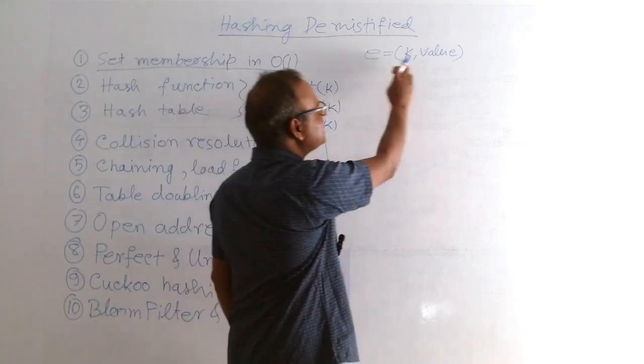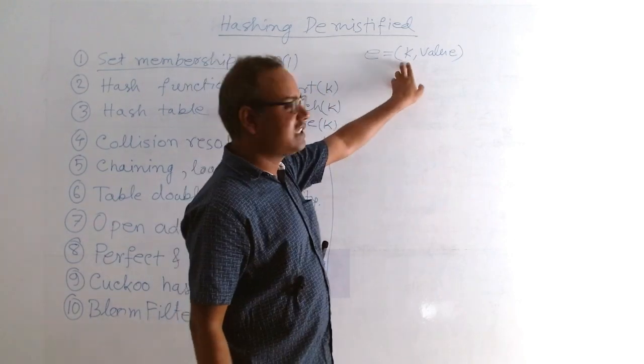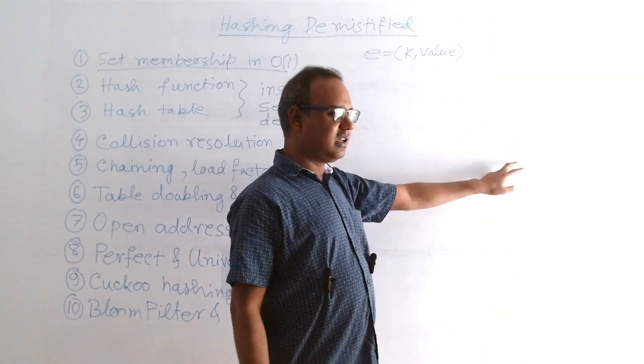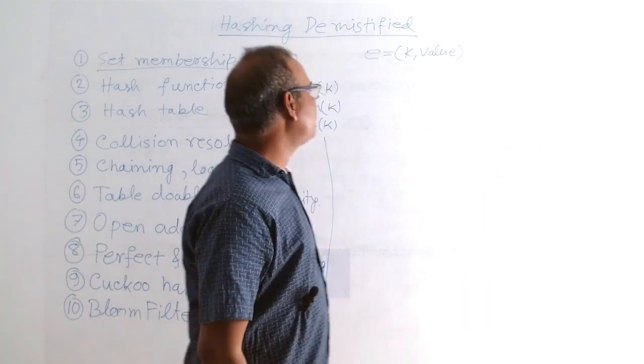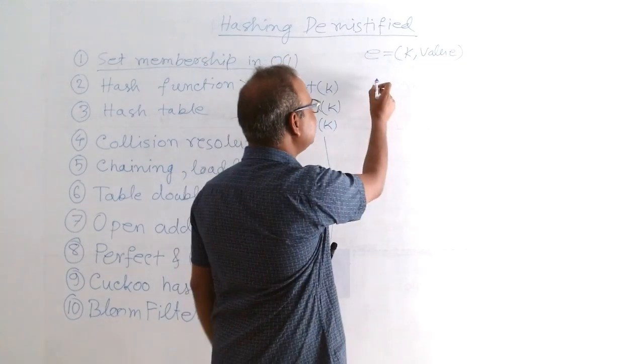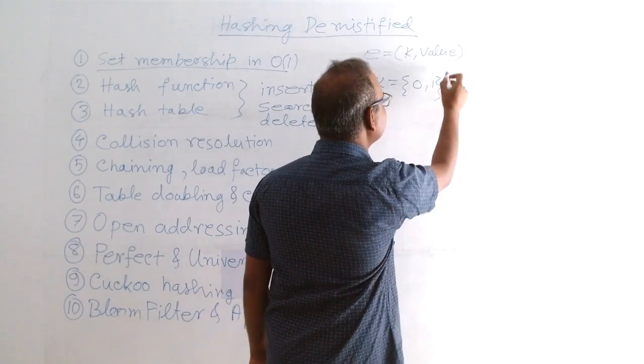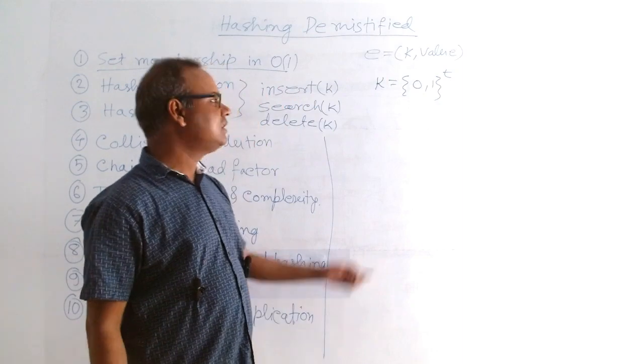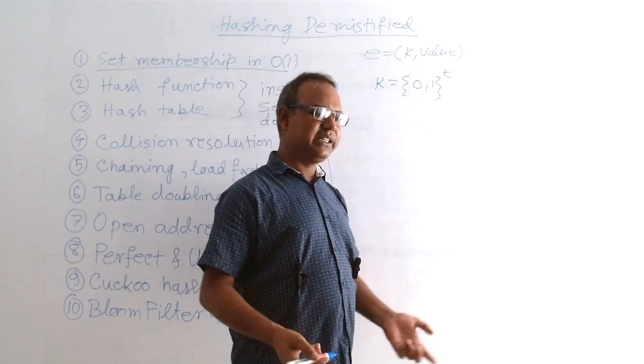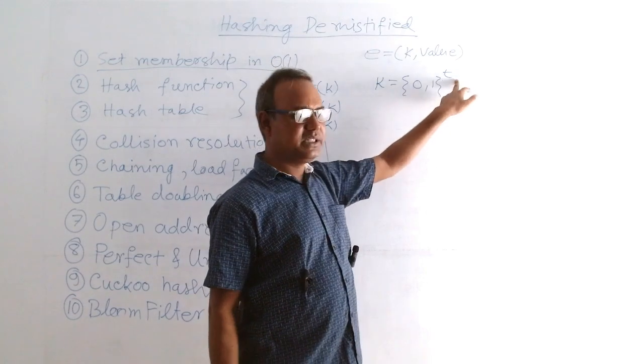Every element is associated with some key and there will be some value. The hash function works on the key space and the value is assigned in the table. So what will be the key space? Let's say these keys are t-bit long. Whatever the key - it may be string, integer, whatever - it should be in binary representation, t-bit long.